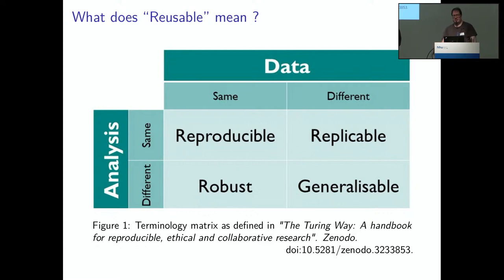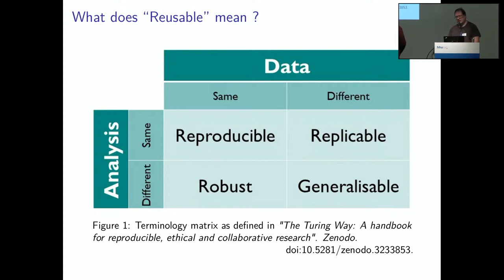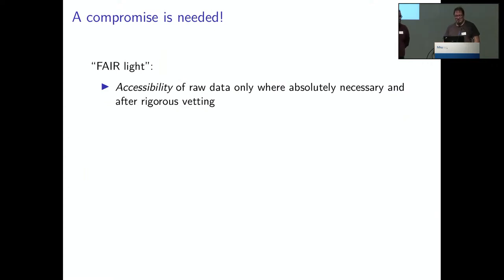Regarding what 'reusable' means in the scientific context, there's a very good book called 'The Turing Way: A Handbook for Reproducible, Ethical and Collaborative Research' which includes a useful matrix. You can differentiate between doing the same analysis or a different analysis, and doing it on the same data or different data. The two cases of 'reproducible' and 'replicable' according to this matrix are what we are mostly interested in for the DSO project at the moment.